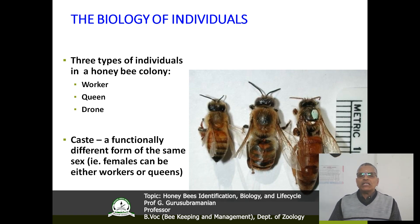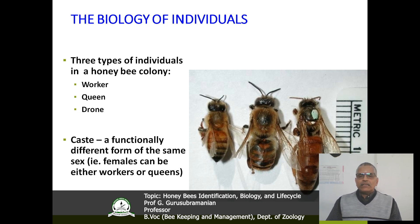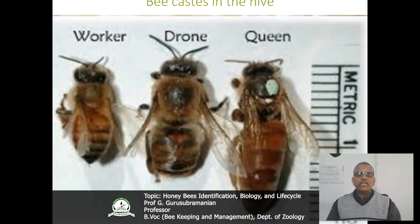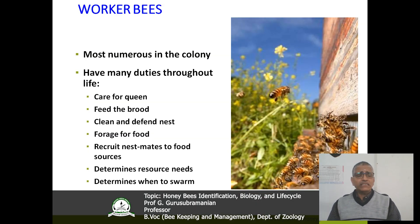Whenever you come to the biology of the bees, there are three types of individuals — that is why we call it caste polymorphism. What do you mean by caste polymorphism? It is a functionally different form of the same sex. Females can be either workers or queens. In a beehive there are three types of individuals: queen, drone and worker. Queen is large in size, the next is drone, and the small one is the worker.